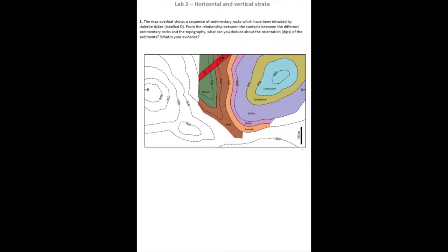Question one says that the map overleaf shows a sequence of sedimentary rocks which have been intruded by dolerite dikes, which have been labeled D. From the relationship between the contacts between the different sedimentary rocks and the topography, what can you deduce about the orientation or the dip of the sedimentary rocks? And what is your evidence?